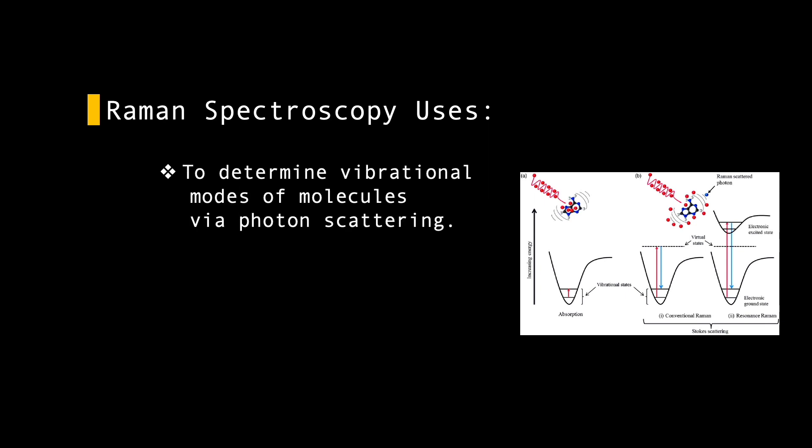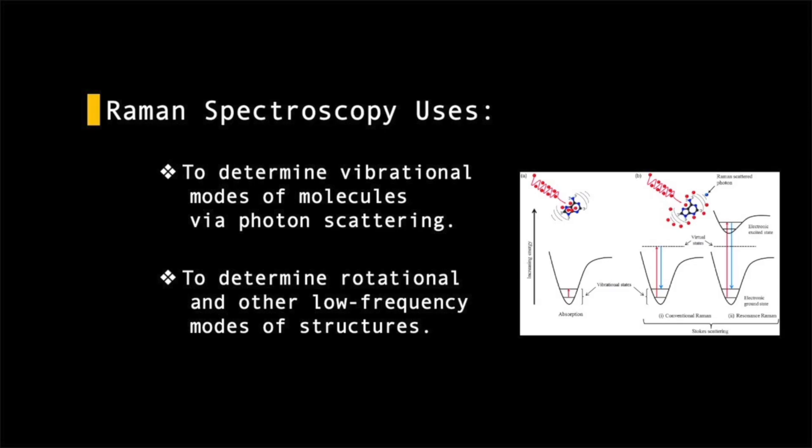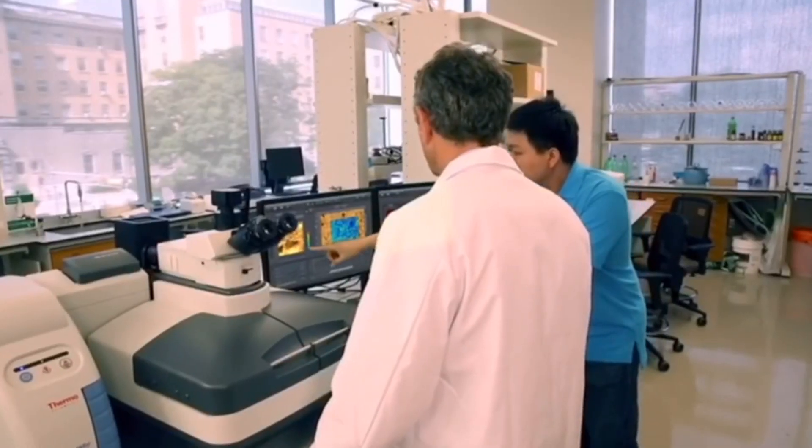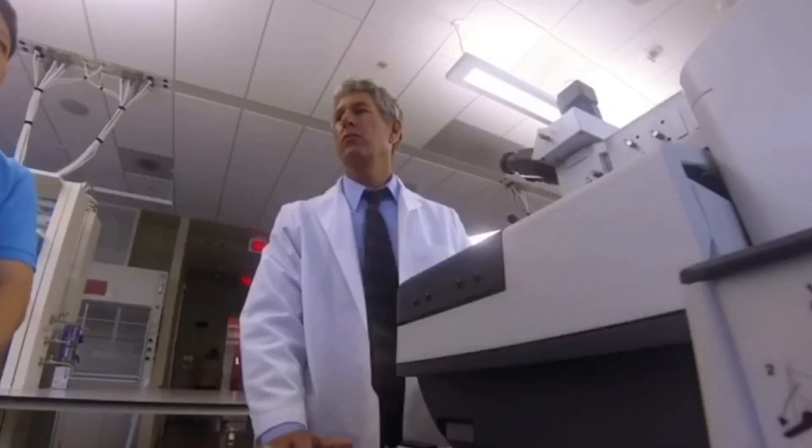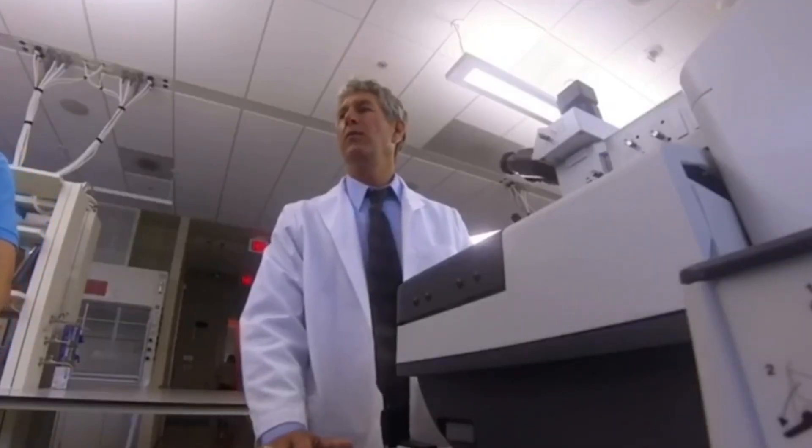It can also be used to determine rotational and other low-frequency modes of structures. As Raman spectroscopy can differentiate materials from others through fingerprint, Raman spectra libraries are often used to identify materials using their Raman spectra.